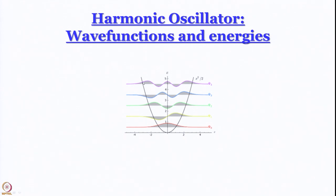As you can see, the wave functions do not exactly terminate at the potential energy surface — they go a little bit beyond, and it was your homework to find out why this is the case. If you look at the wave functions, they look somewhat similar to the particle-in-a-box wave functions. The lowest one is pretty much a Gaussian function with no node; there is one node in the second one, two in the third, and as you go higher up, the number of nodes increases. As a rule of thumb, energy and number of nodes go hand in hand.